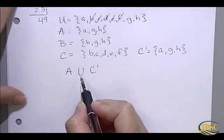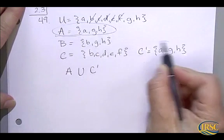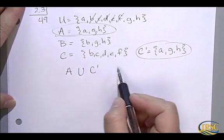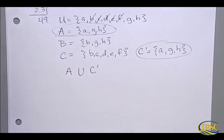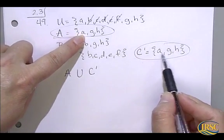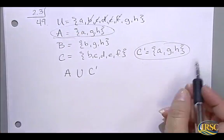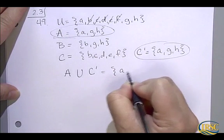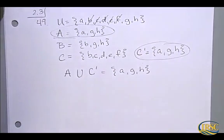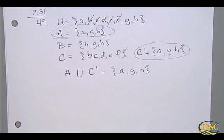Now we want to take the union between set A and C complement. The union joins them together. Interestingly, they happen to be the same letters, so that gives us the set of A, G, H. If we had found the intersection, would we have gotten a different answer? The intersection would give what they have in common — the same thing. So when two sets are equal, their union and intersection give the same answer.